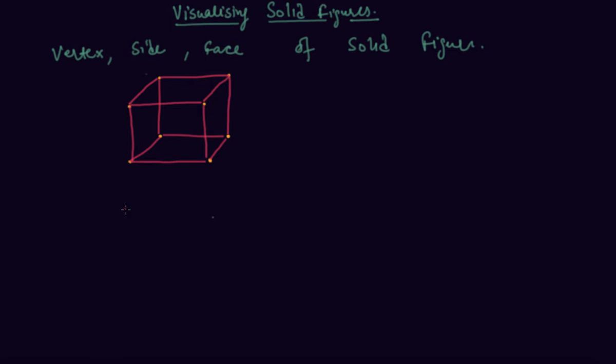So students, this is a cube. Now I will tell you what is a vertex. The corner point, this is called vertex. And the edge, edge is basically this line. Let me draw this in a different color. So this line here is called an edge.